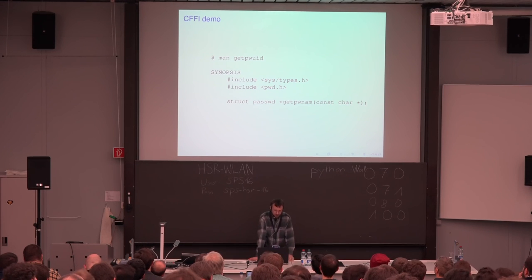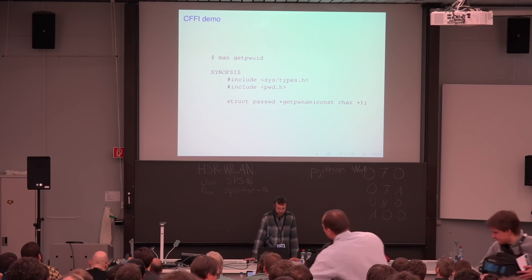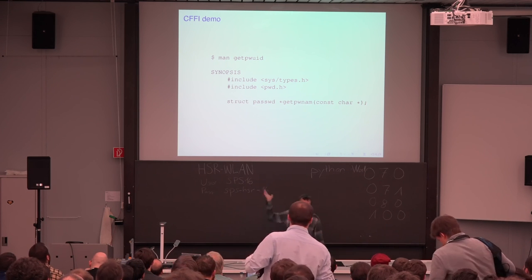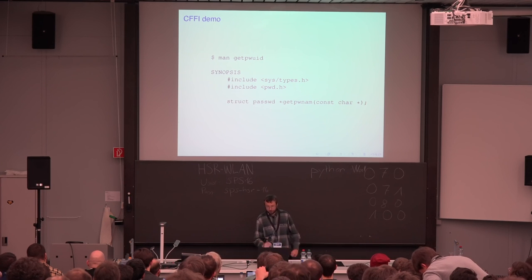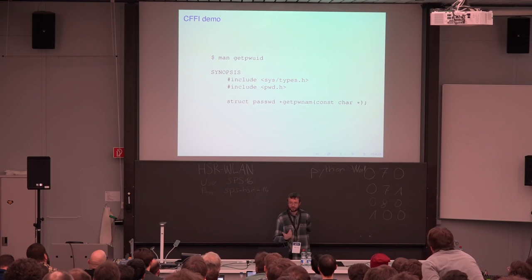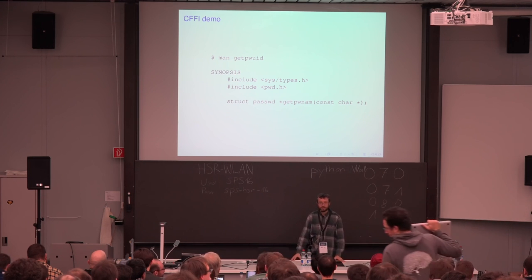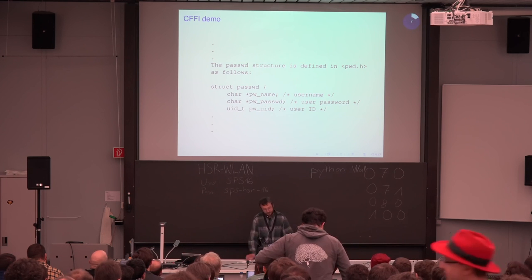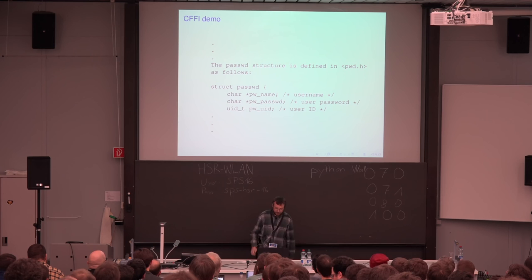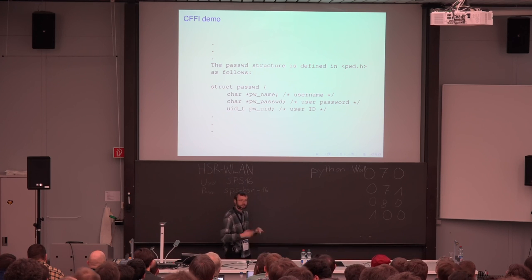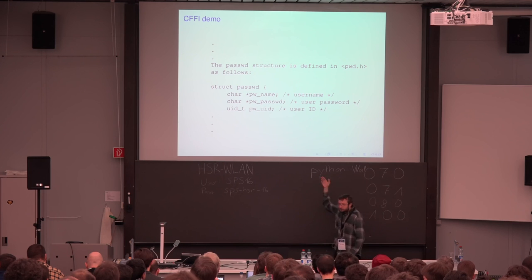How does it work? Let's say there is some function — on Linux or POSIX, you type 'man some_function_name' and you get this kind of information. It tells you which includes you need, and you get the function getpwnam, which you call with a const char star, and it gives you a pointer to a struct passwd. This is great for C, but does not help you for Python. The struct passwd is defined like this, say the man page, which means it should have at least these fields, but you don't exactly know which fields they are or in which order.